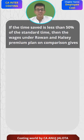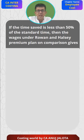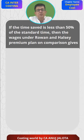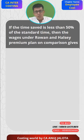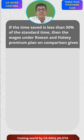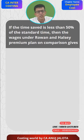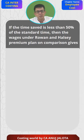If the time saved is less than 50 percent of the standard time, then the wages paid under Rowan and Halsey premium plan on comparison gives — for example, if the time allowed was 10 hours and you are saving less than 50 percent of the time, suppose time taken is 6 hours, so time saved is 4 hours, which is 40 percent. So you are saving less than 50 percent. What then are the wages under Rowan and Halsey?